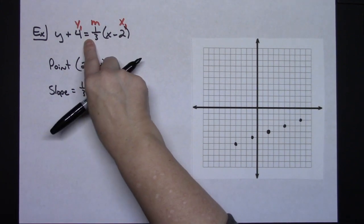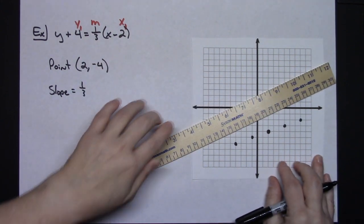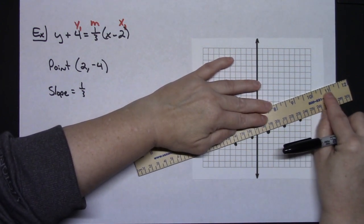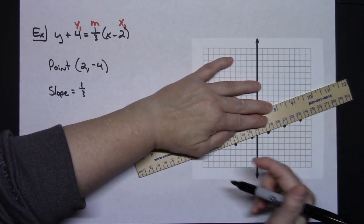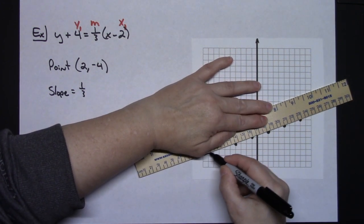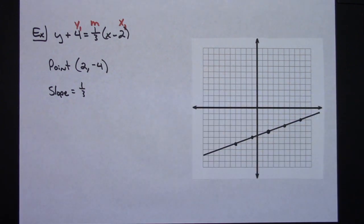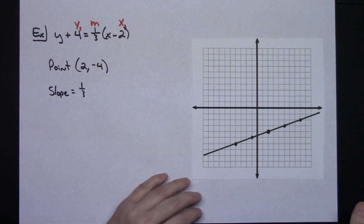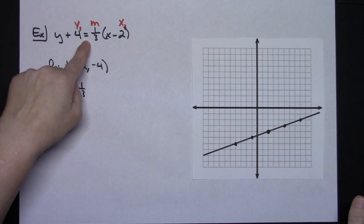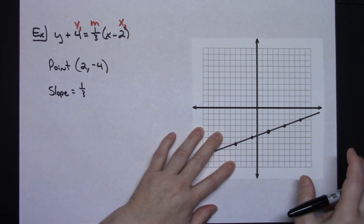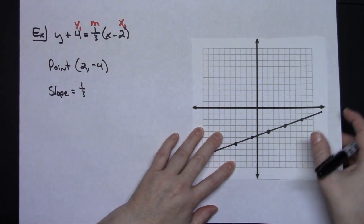Since I see an equal sign, there's no shading on this one — I'm just graphing the equation in point-slope form. Now let's change it up and use an inequality symbol instead of the equal sign.